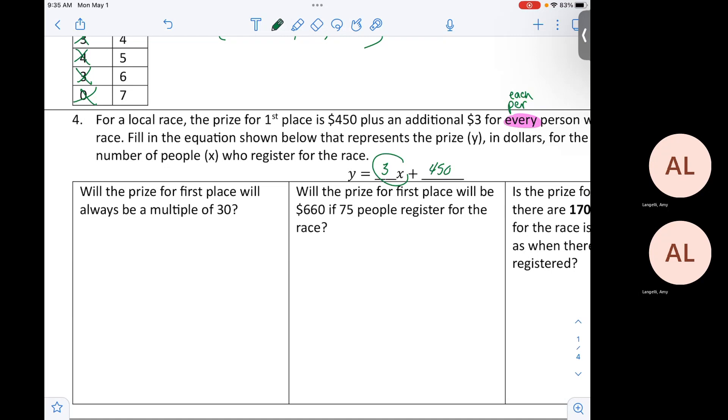What word is by 3 that tells you it's your slope? It is every. Isn't that the same kind as the word per or the word each? That tells you that 3 is your slope. If you see every or each or per, that's your slope. Let's go ahead and take a look at the first one. Will the prize for first place always be a multiple of 30? What is a multiple of 30? 30, 60, 90, 120, et cetera.